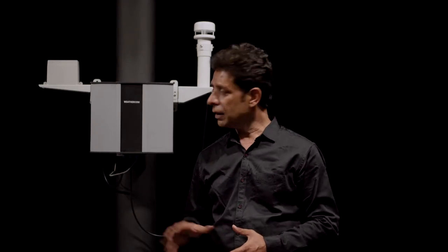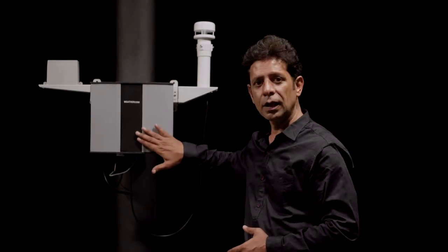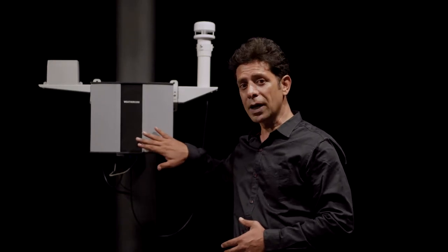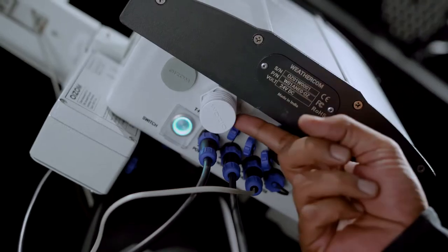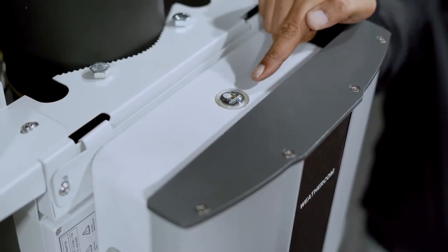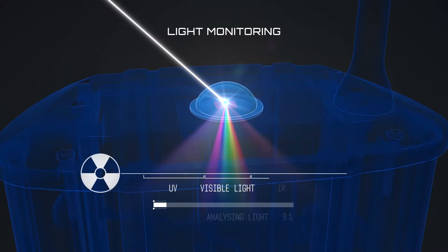Let us see how Weathercom is different from your regular weather station. This is the central unit — the heart of the system — which consists of a data logger, power management and atmospheric sensors. Atmospheric parameters like temperature, humidity and pressure are measured through this probe. On the top is the paranometer dome, which has various photosensors to measure UV radiation, light intensity and solar radiation from the ambient light.